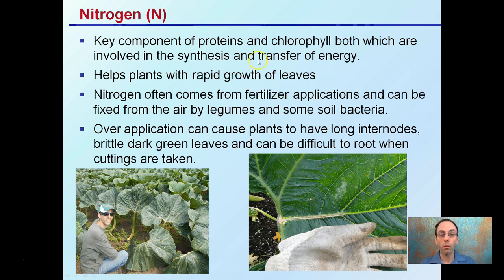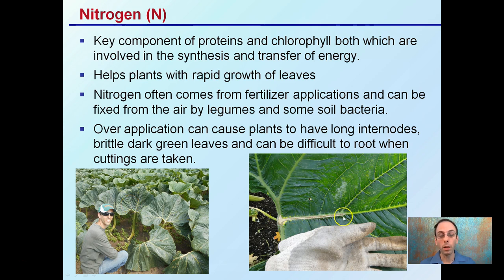However, while nitrogen gives that nice rapid growth of leaves, I caution you because over-application can cause plants to have long internodes, brittle dark green leaves, and can be difficult to root when cuttings are taken. As seen with the giant pumpkin example, a plant overfed in nitrogen gets these bloated dark green leaves and really long stretched stalks. You can also get some splitting. All of these are negative effects of adding too much nitrogen.